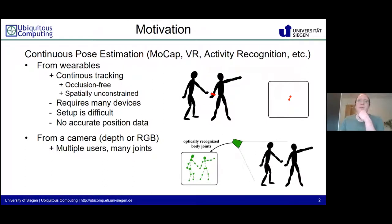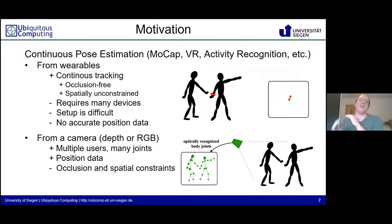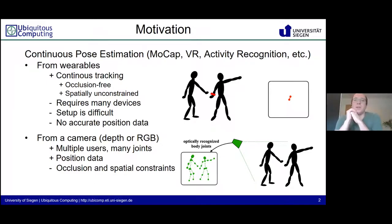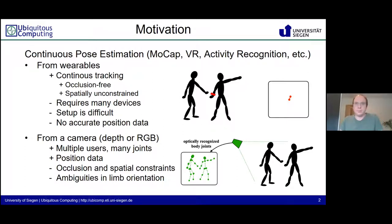From a camera, we can have multiple users and many joints recognized all at once, and we also have position data. But we are limited by occlusion and spatial constraints. When users are occluding each other or behind obstacles, we cannot estimate the joint orientation. Spatial constraints mean we have to be in the viewing frustum of the camera. Furthermore, there are also ambiguities in limb orientation, and the data is not available to the user as it is on a smartwatch, for example.